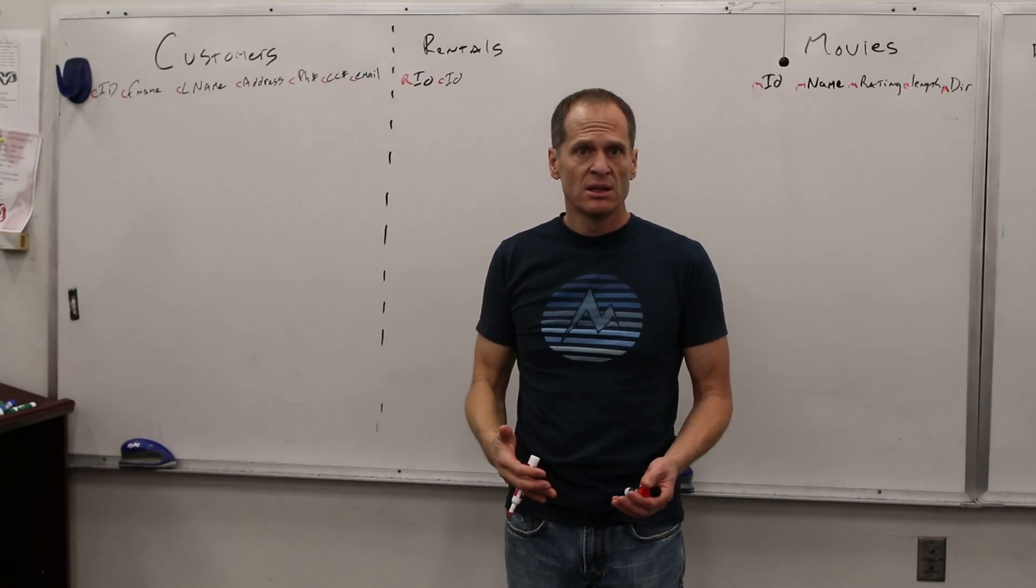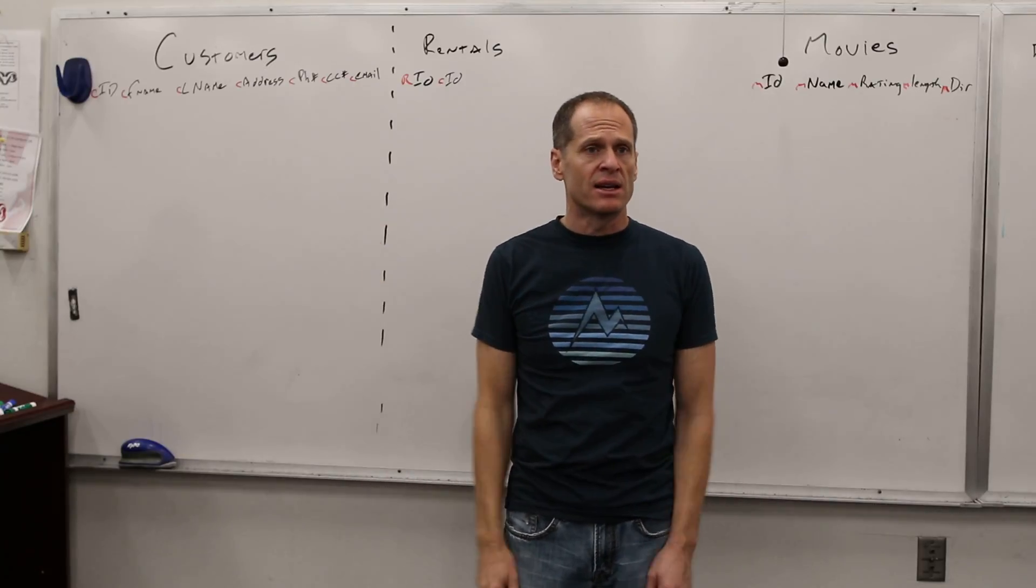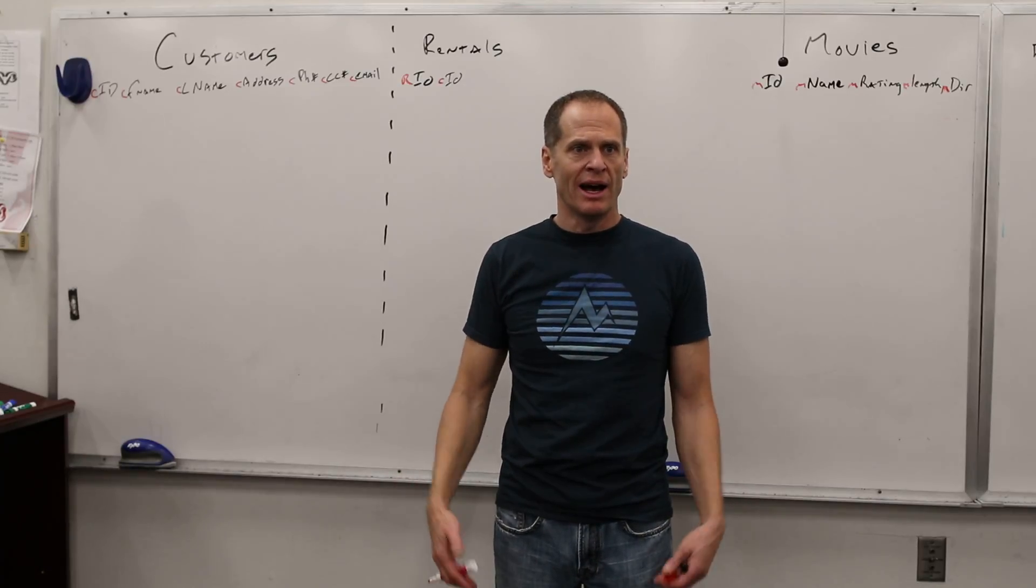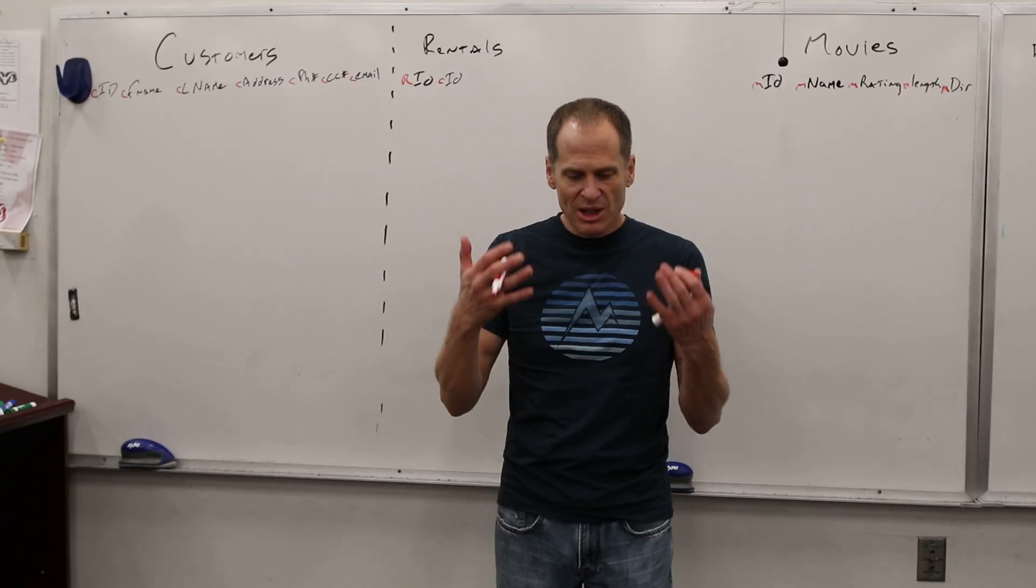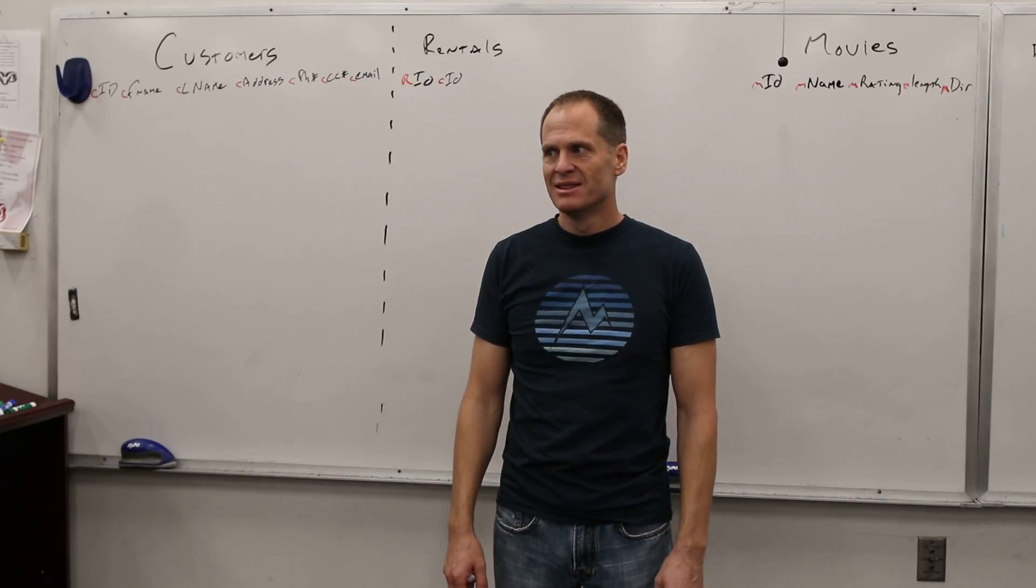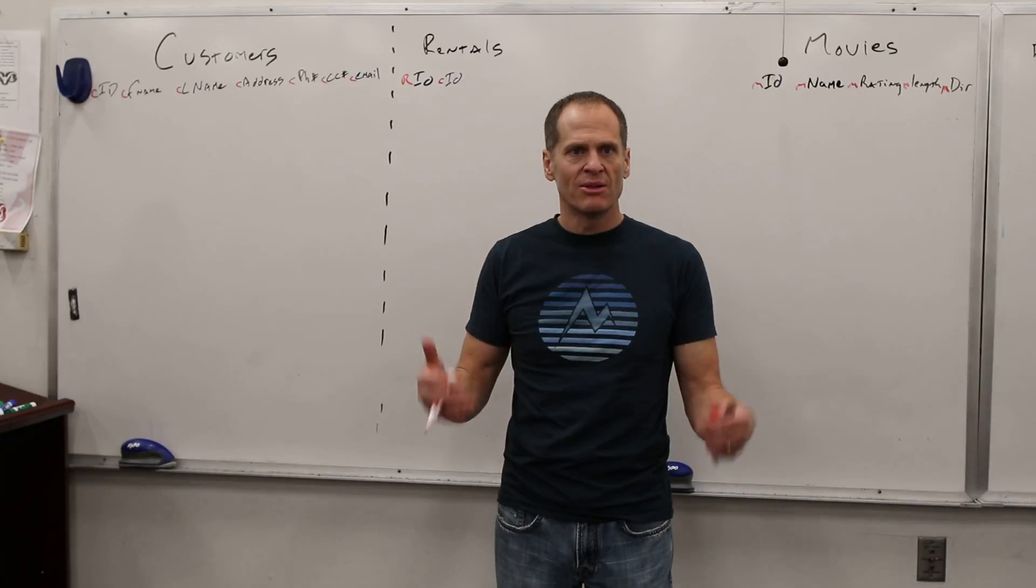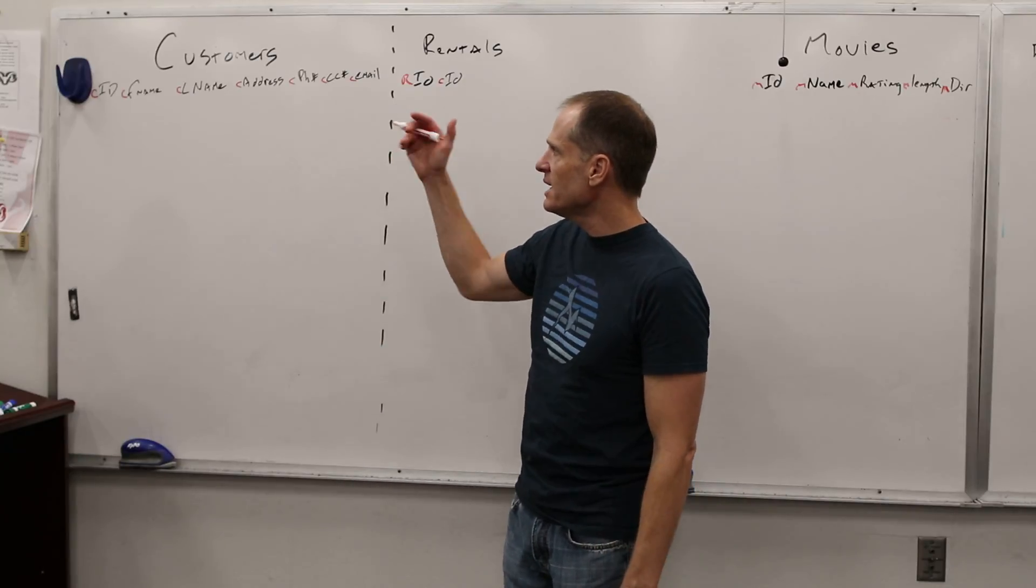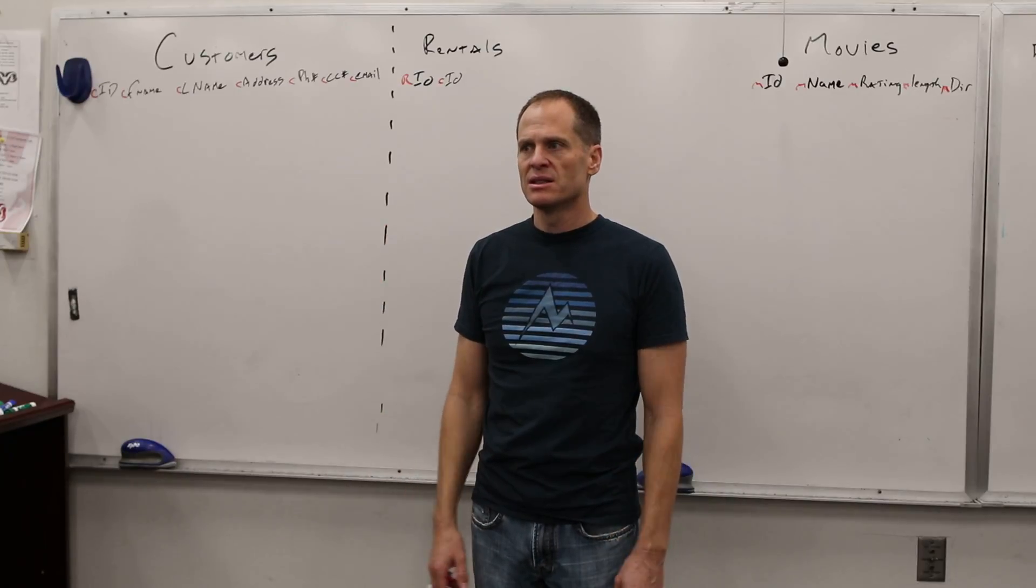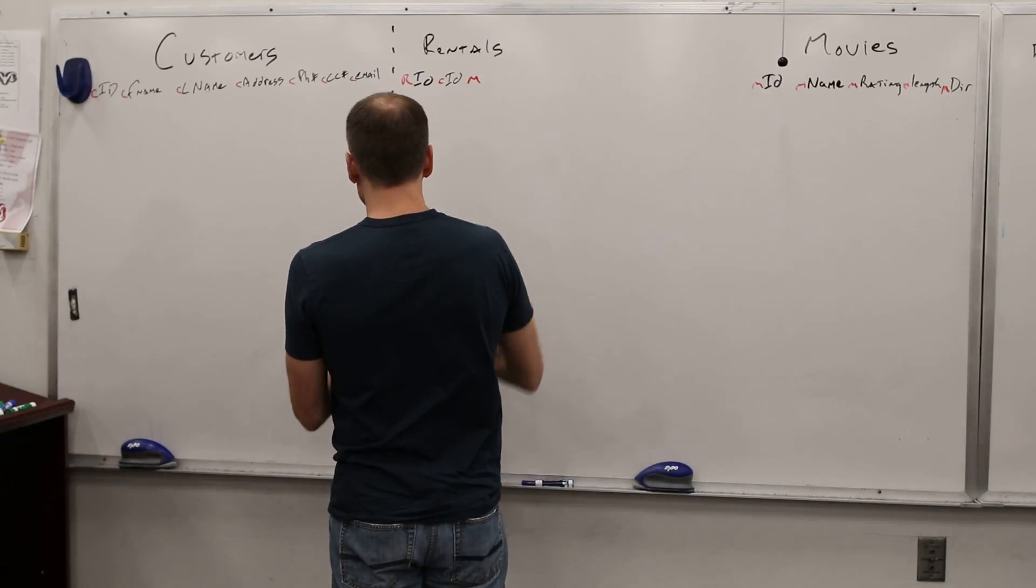So when you see them in code, if you see 'name' in code, you're not like, is that customer name? Is that movie name? Is that dog name? You're going to be looking at code that's accessing the data, referencing these fields, and you're going to be like, what is name? But if you have C_name, CL_name, oh customer last name, sweet. I totally know what that is. And if I have R_ID, rental ID, sweet. Customer ID and movie ID.